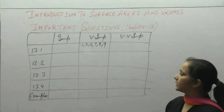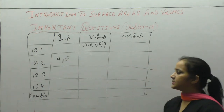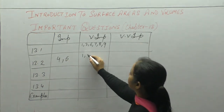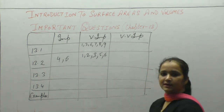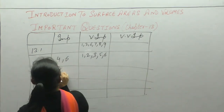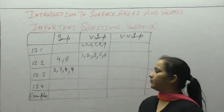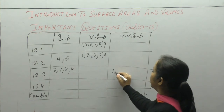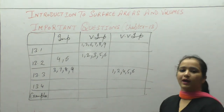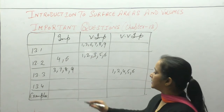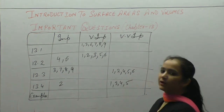In Exercise 13.2, important questions are 4 and 6. Very important are 1, 2, 3, 5, and 6. In Exercise 13.3, important are 3, 7, 8, and 9. Very important are 1, 2, 4, 5, and 6. Exercise 13.3 as a whole is very important. In Exercise 13.4, very important are questions 1, 3, 4, and 5.